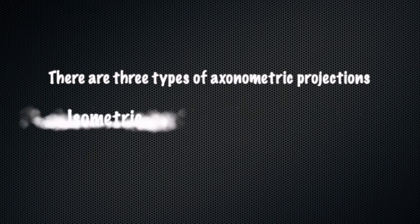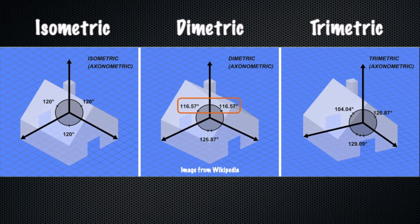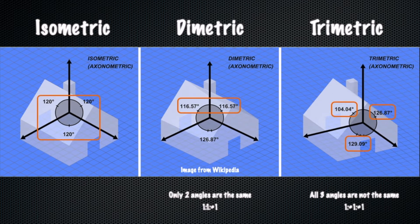There are three types of axonometric projection: isometric, dimetric, and trimetric. In dimetric projection, one or two of its major axes is foreshortened. In trimetric projection, all three major axes are foreshortened. In dimetric projection, the projection of two angles between the axes are equal, and the other is not. In trimetric projection, the projections of the three angles between the axes are all unequal. In isometric projection, the projections of the three angles between the axes are all equal — and that is 120 degrees.